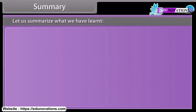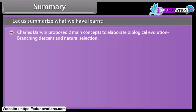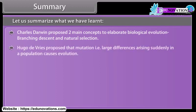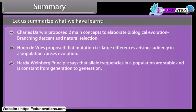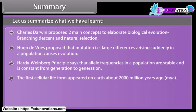Let us summarize what we have learned: Charles Darwin proposed two main concepts of biological evolution — branching descent and natural selection. Hugo de Vries proposed that mutation, i.e., large differences arising suddenly in a population, causes evolution. The Hardy-Weinberg principle says that allele frequencies in a population are stable and constant from generation to generation. The first cellular life form appeared on earth about 2,000 million years ago.